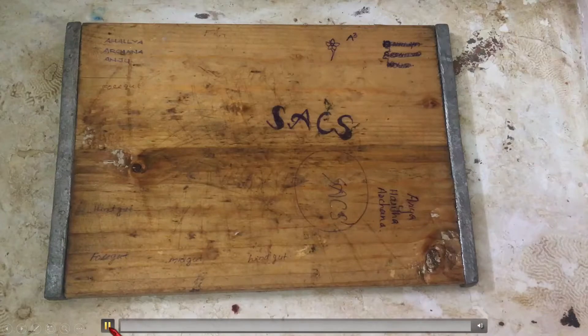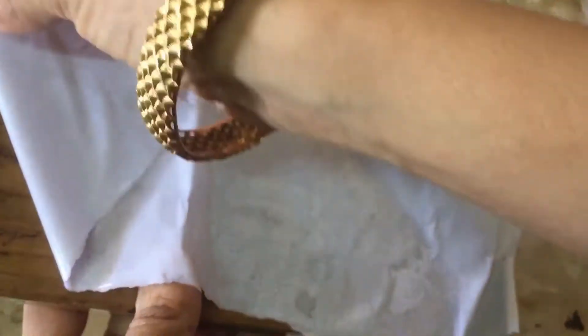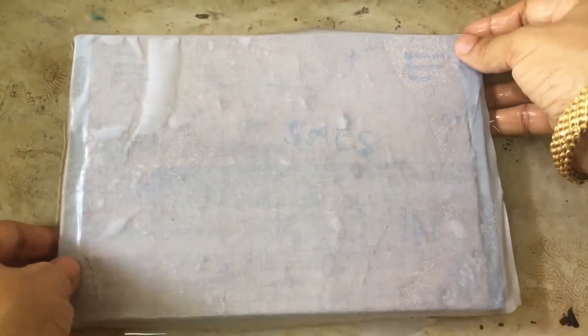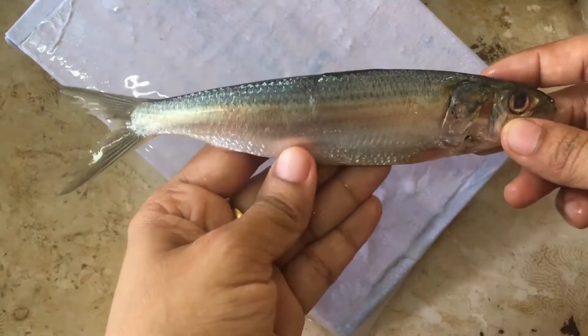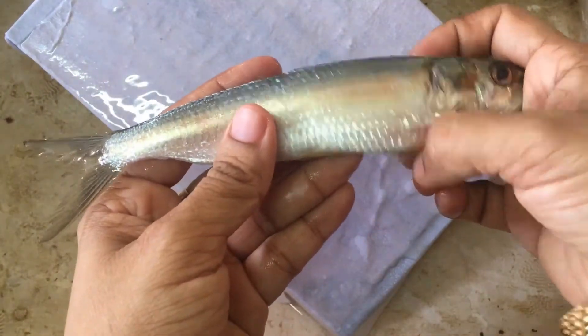Like all practicals, first of all we need to wet a paper and fix it over the board without any wrinkles, to make your practical neat. At the time of examination, before soaking the paper in water, you have to write your name and roll number on the paper for the sake of the examiner.